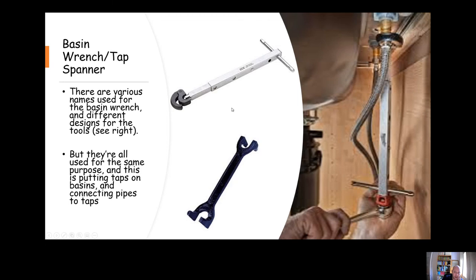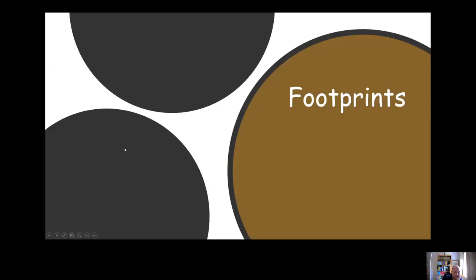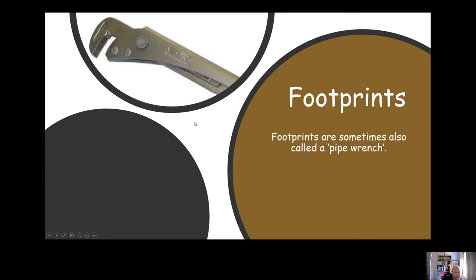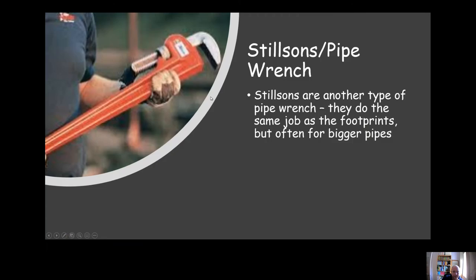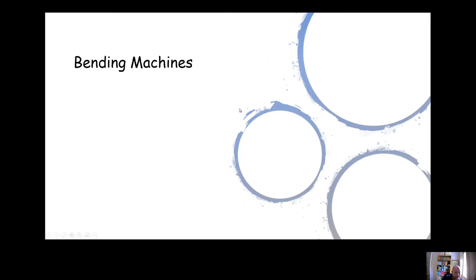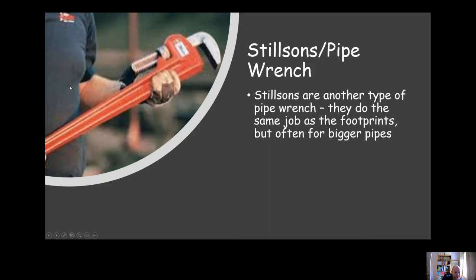Footprints - another useful bit of kit. They are a form of pipe wrench. We can use them for gripping pipe, tightening fittings. Stilsons - Stilsons are another type of pipe wrench, just a much bigger version. You can see Stilsons, these things here.